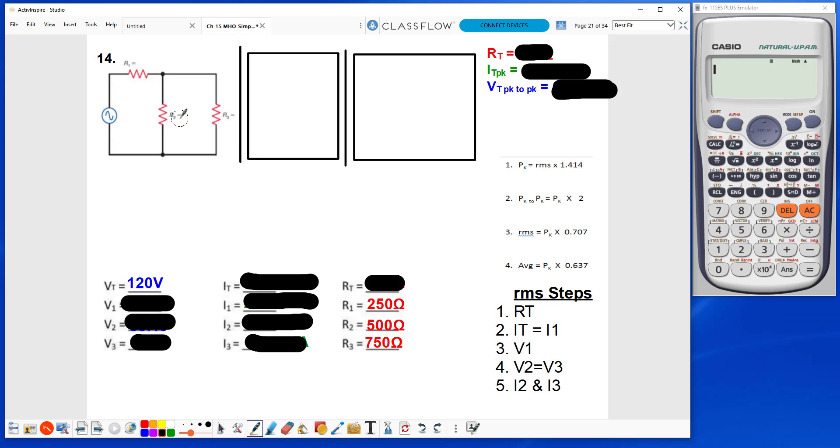We see here that R2 and R3 are in parallel with one another, so I will take the 500 ohms and the 750 ohms and run them through the reciprocal formula, 1 over under 1 over under 500,